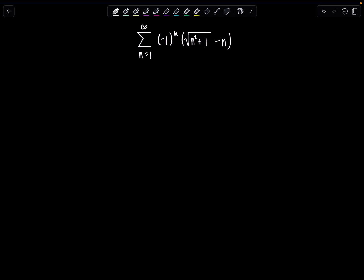Welcome to Math with Professor V. Here's your latest series of the day. We have the sum from n equals 1 to infinity of negative 1 to the n times the square root of n squared plus 1 minus n.